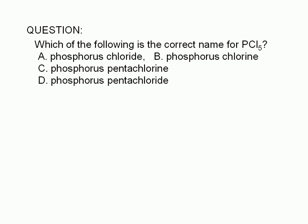Which of the following is the correct name for PCl5? A. Phosphorus chloride, B. Phosphorus chlorine, C. Phosphorus pentachlorine, or D. Phosphorus pentachloride.